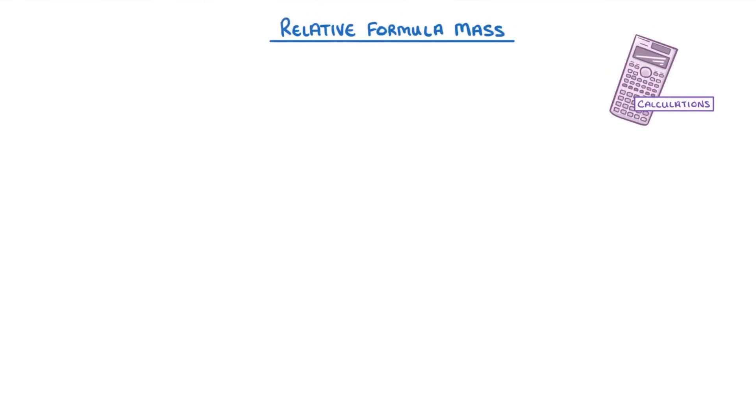If you remember from previous videos we can find the mass number of any element by looking in the top left corner of its nucleus symbol and this tells us the number of protons plus the number of neutrons in its nucleus.